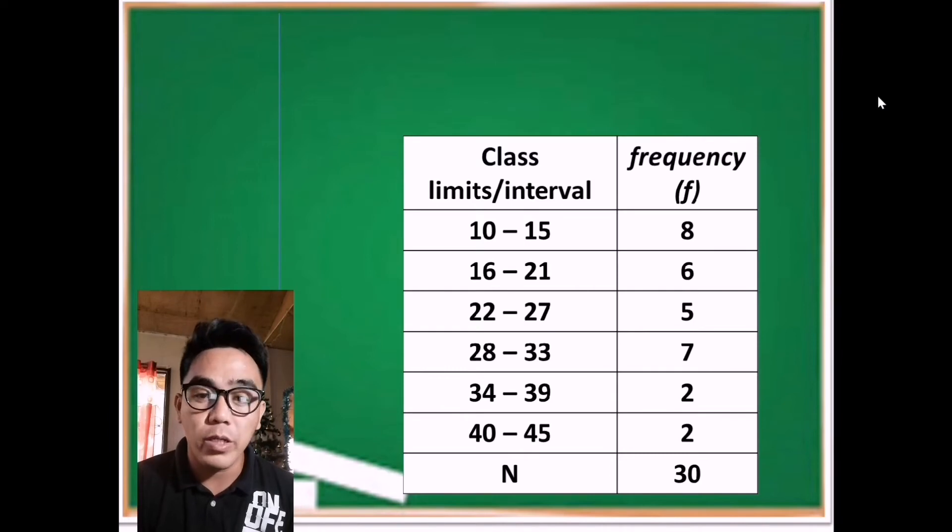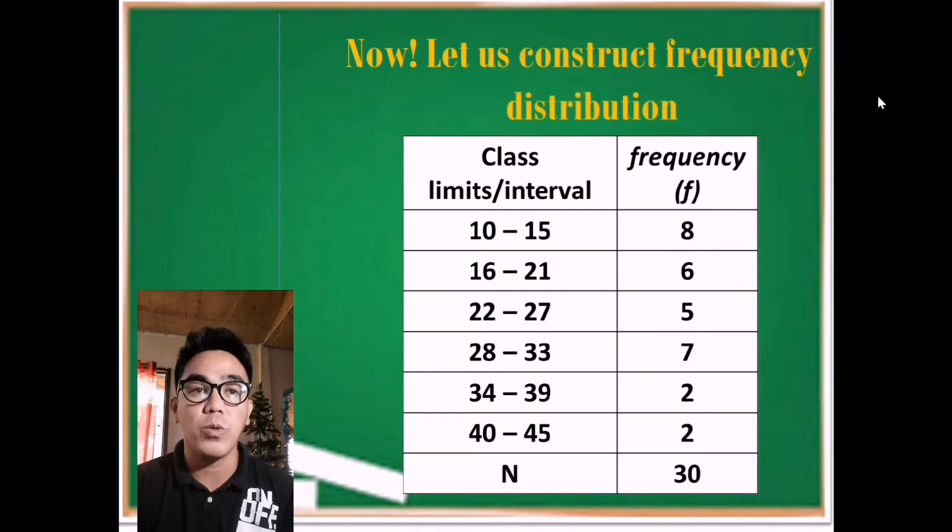And if we're going to count all the frequency, we are talking about the total number of population which is denoted as capital N. In this case, the total number of population is 30. So right now, let's start to construct a frequency distribution.